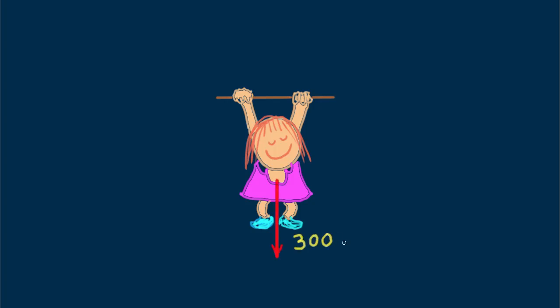Consider little gymnast Nellie Newton, who weighs 300 Newtons, which we represent with a red vector, downward in the direction of gravity. 300 Newtons is about 66 pounds. She holds onto a bar that's supported by a rope attached to the ceiling. We neglect the weight of the bar. The rope is taut under a stretching force called tension.